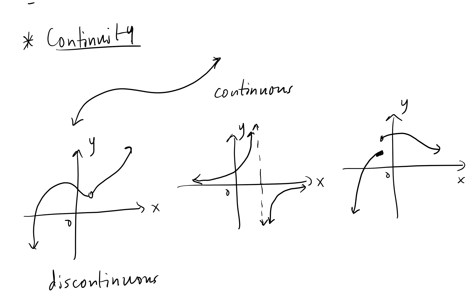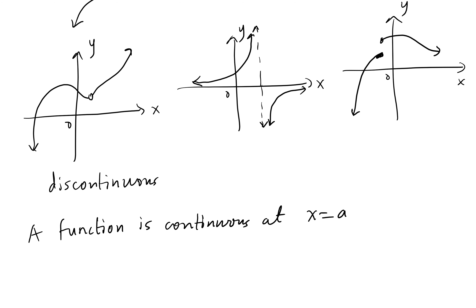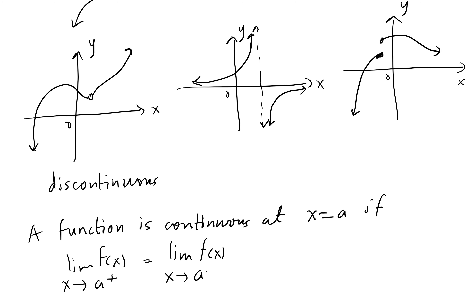How do we prove a function is continuous? We say a function is continuous at a point x = a if the limit of f(x) as x approaches a from the right side equals the limit from the left side, and both equal f(a). If the function is continuous at every single point in its domain, it is called continuous.